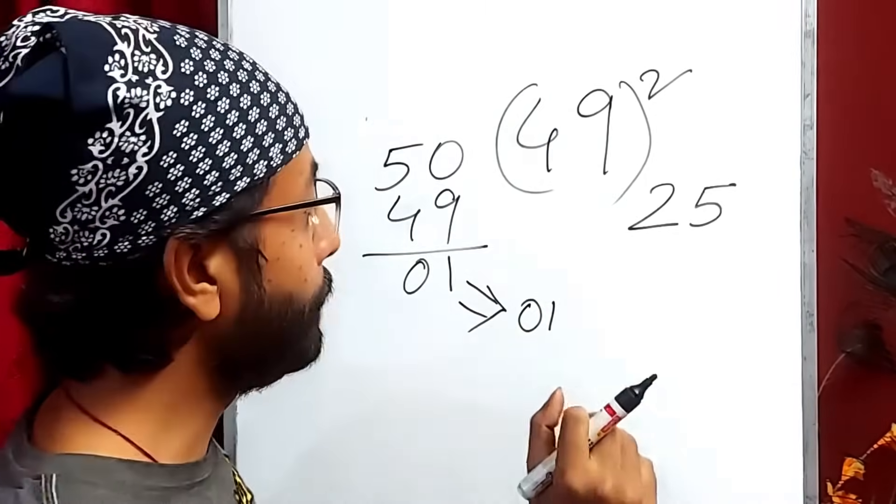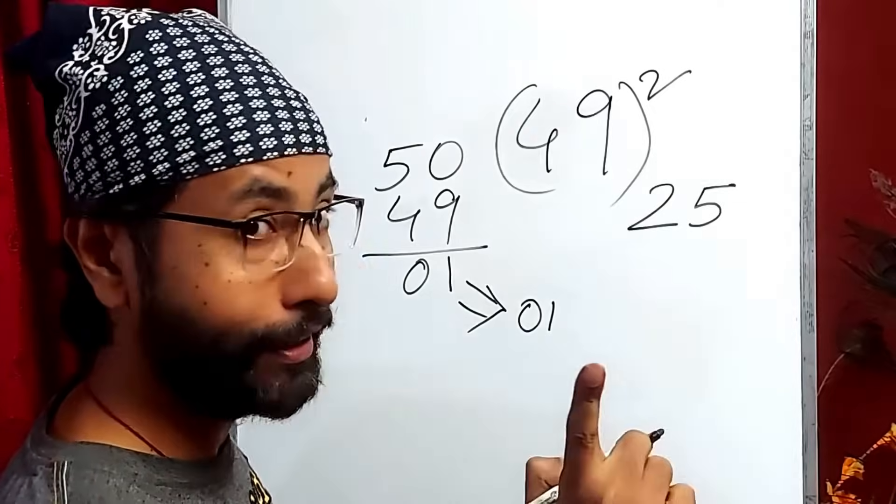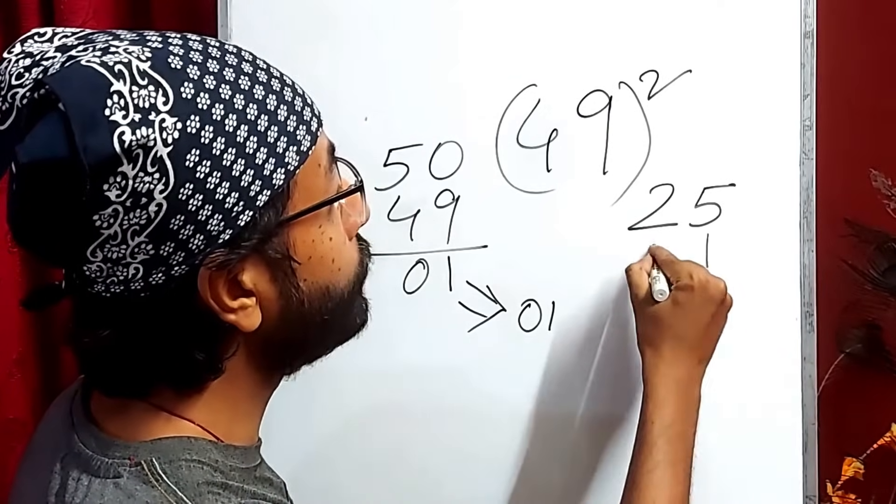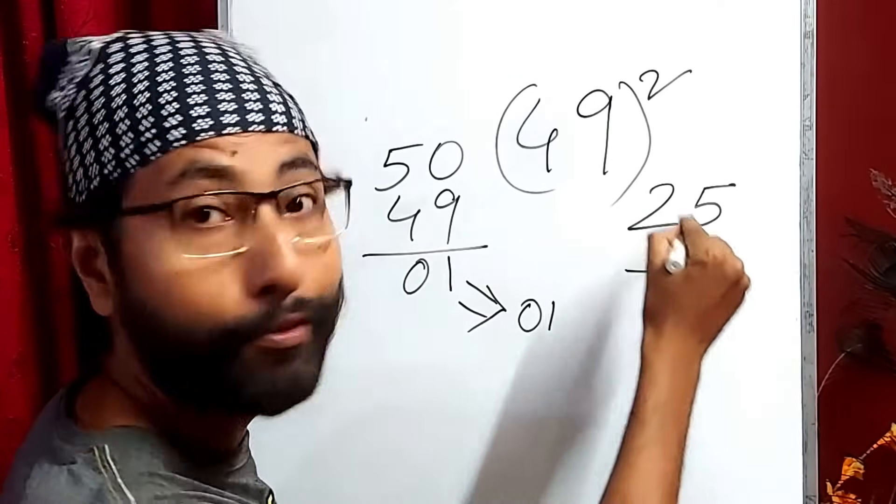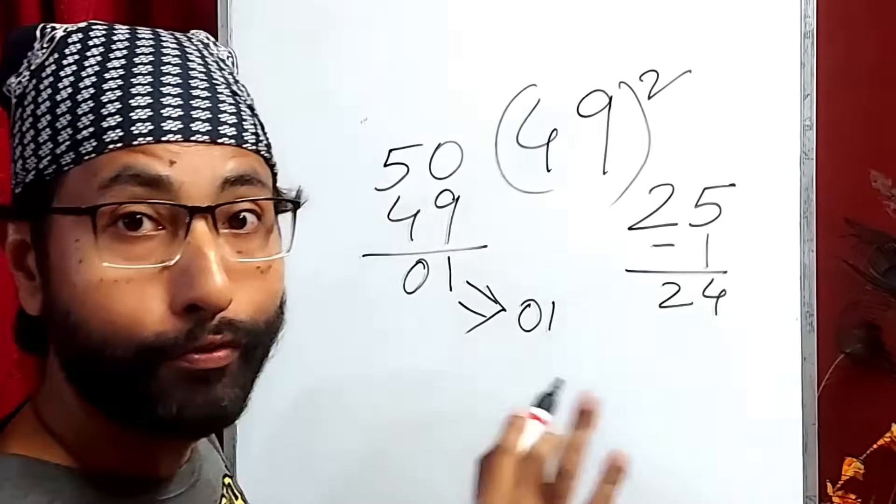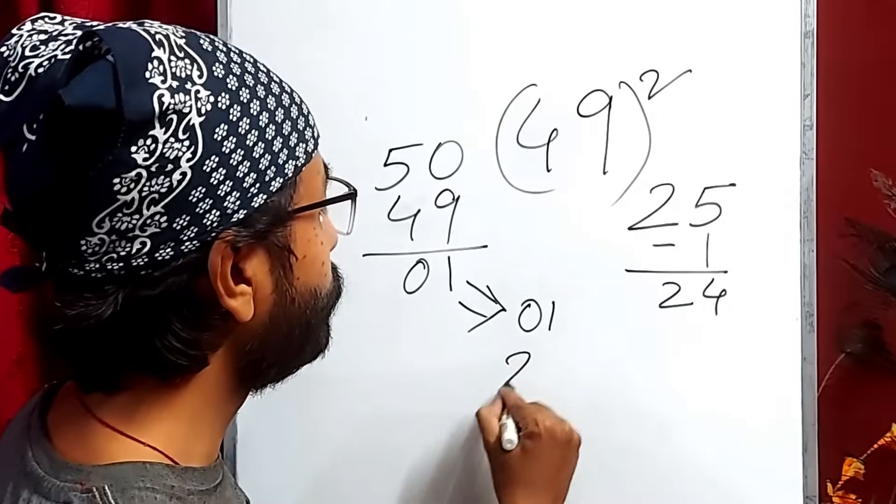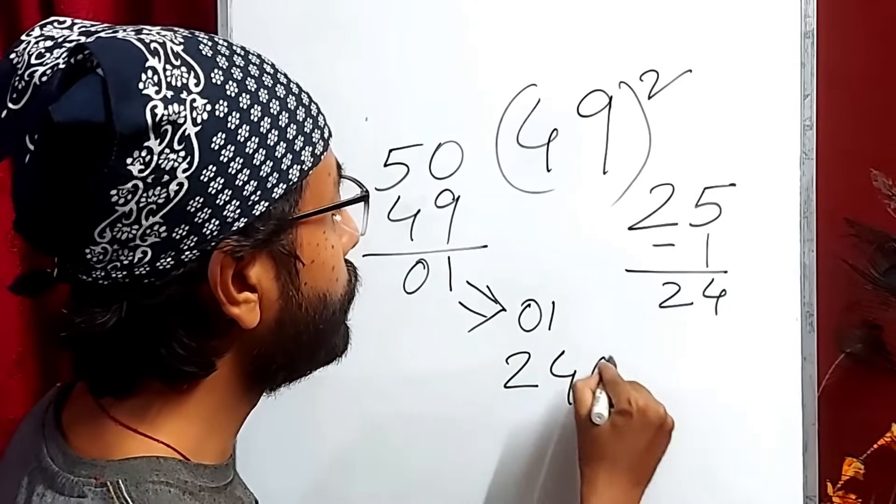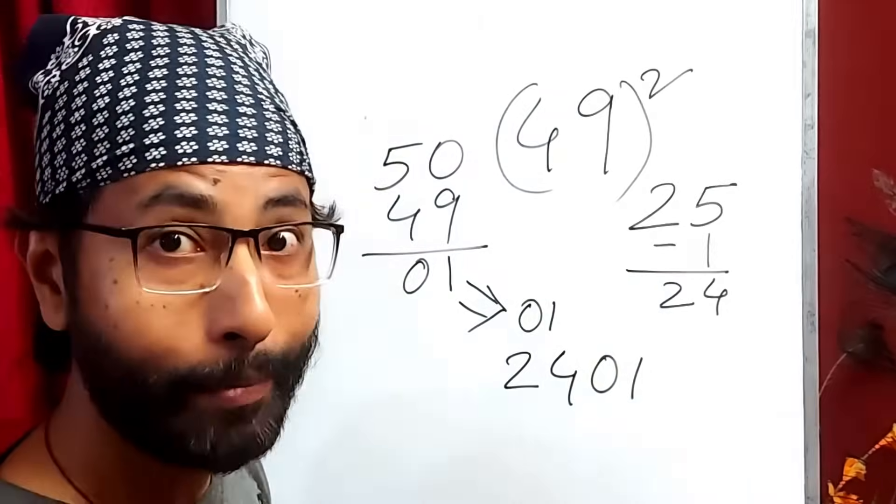So, the final answer will be, okay, I forgot one thing. That is, now, I have to remove this 1 from 25. So, it will be 24. So, the final answer will be 2, 4, 0, 1. Isn't it simple? Let's get another one.